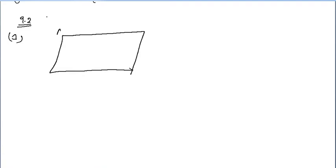ABCD is a parallelogram, it is given. And AE is perpendicular to DC — we will drop a perpendicular AE to DC.